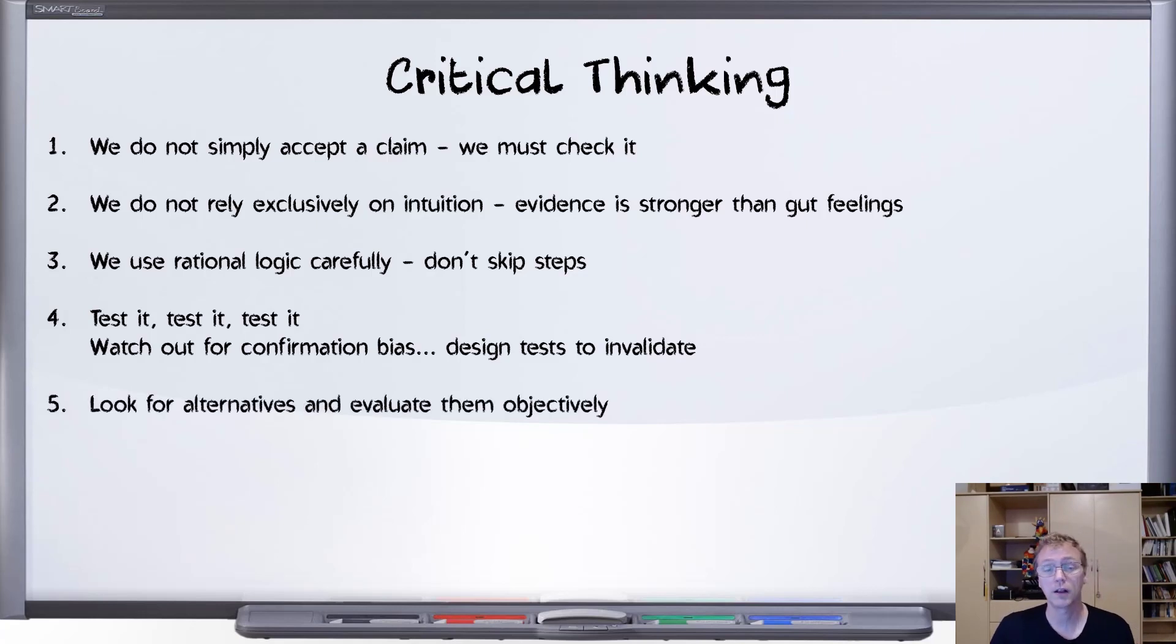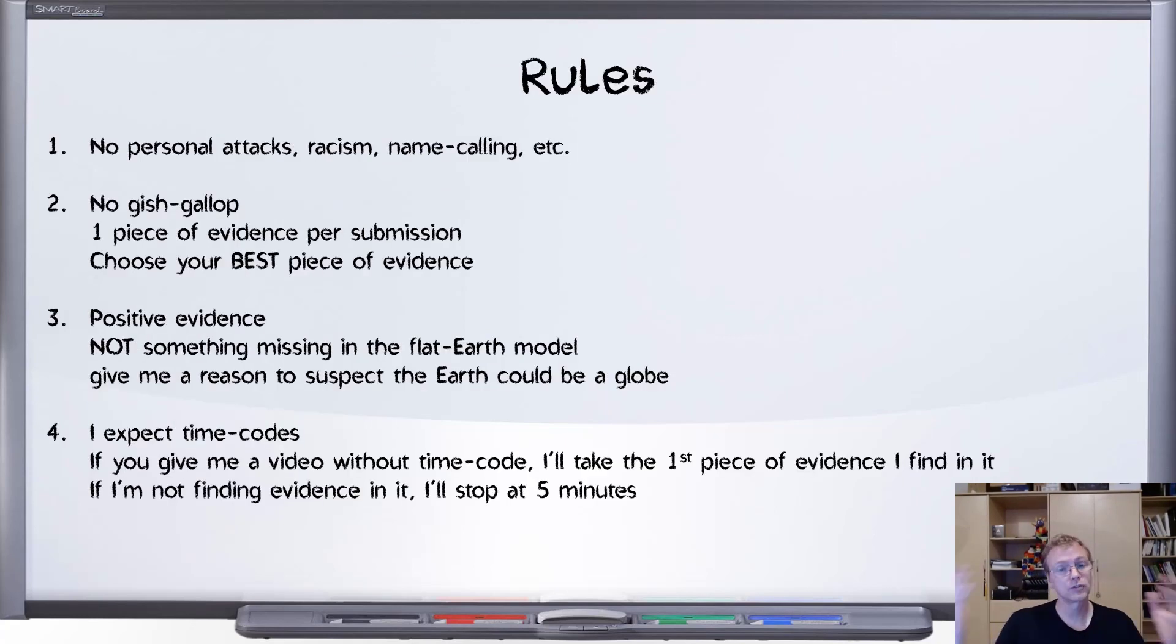Okay. We will look for alternatives. As we're evaluating this evidence for roundness, we must look at any flat alternatives. As before, same rules apply, modified only slightly to apply in the reverse. So, number one, there will be no personal attacks, no racism, of course, no name calling of any kind. Number two, no gish gallop.